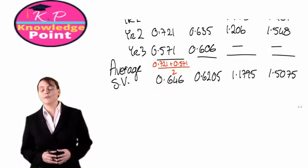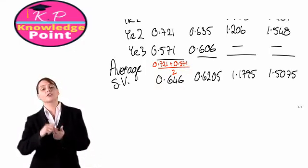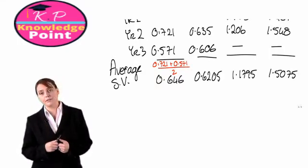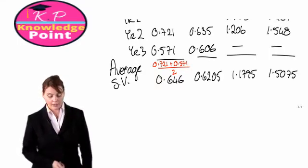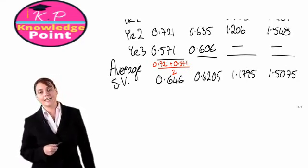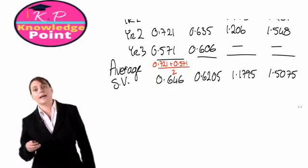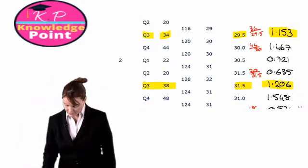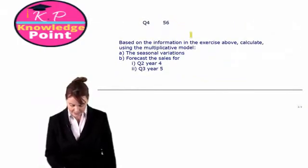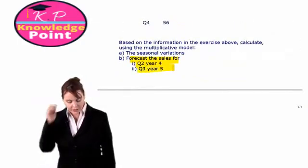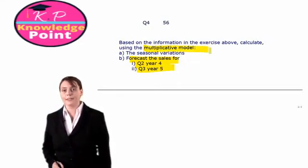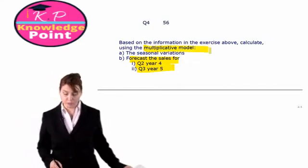Now we have all the information we need. We know what the trend is — sales will increase by 0.5 per quarter — and we know what the seasonal variation is for each of our four quarters. So now we can do our forecasting. Looking back at the question, we have been asked to forecast the sales for Q2 of year four, and Q3 of year five, using our multiplicative model.